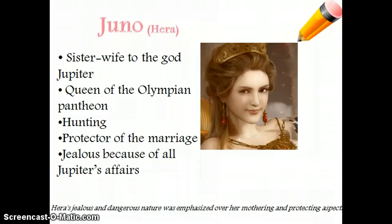Jupiter's wife is Juno, known as Hera in Greece. She is both his sister and his wife. She is the queen of the Olympian pantheon, the goddess of hunting, and the protector of marriage. She is best known because she was always jealous of Jupiter's affairs and upset about them.